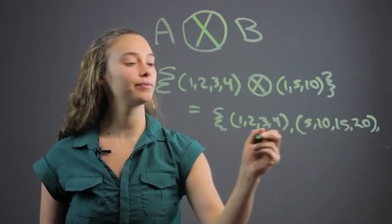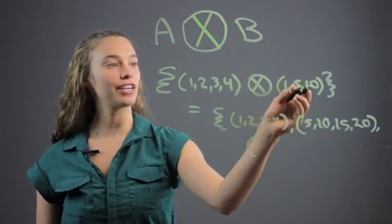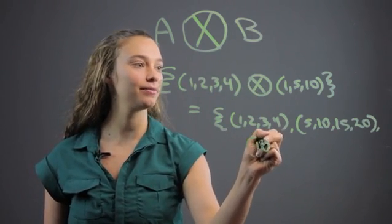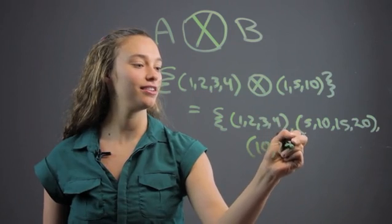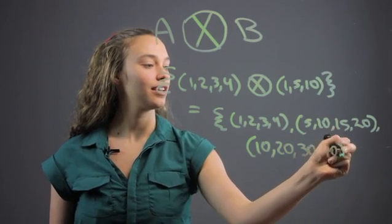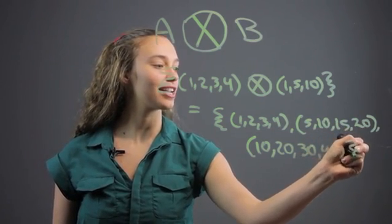And then for the next part, I'll go down here. We're going to multiply 10 by all these numbers here. So we get (10, 20, 30, 40). And then we'll close the brackets like such.